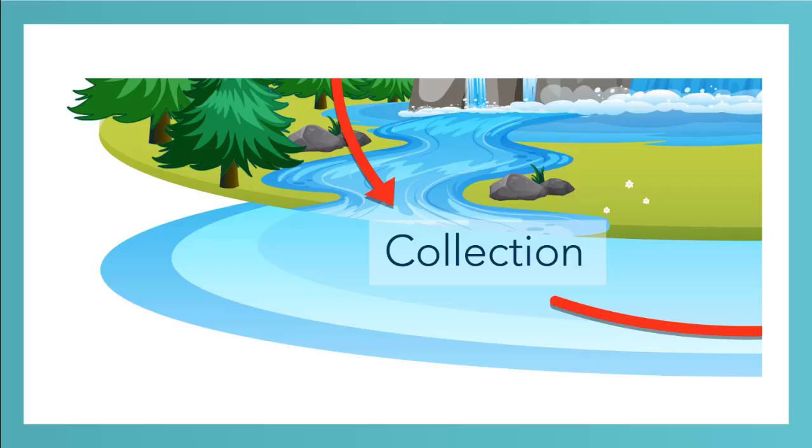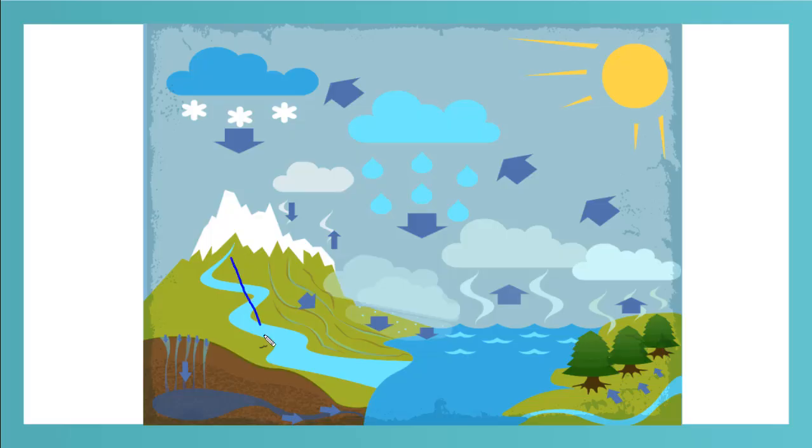Water can also drain over the surface of the earth. This is called runoff. This is an example of a stream, and this is an example of runoff.